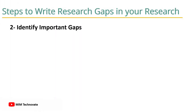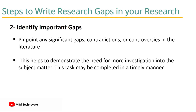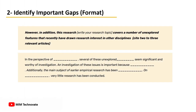Step 2: Identify important gaps. The next step is for researchers to pinpoint any significant gaps, contradictions, or controversies in the literature. This helps to demonstrate the need for more investigation into the subject matter.